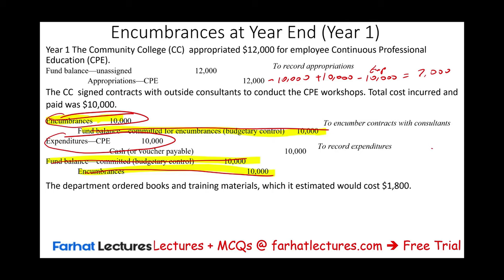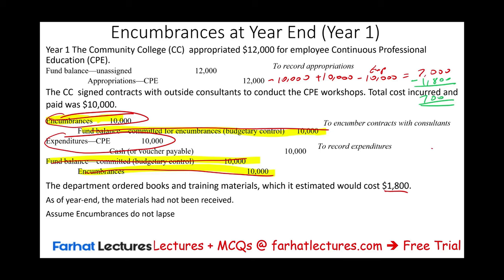Now the department ordered books and training material, which it estimated would cost $1,800. As part of the CPE program, they ordered books and training material for employees. By year end, we had not received that material — we ordered it but did not receive it. When we order something, we need to encumber it. We debit encumbrance $1,800 and credit fund balance committed — budgetary control — $1,800. We're going to assume that these encumbrances do not lapse.